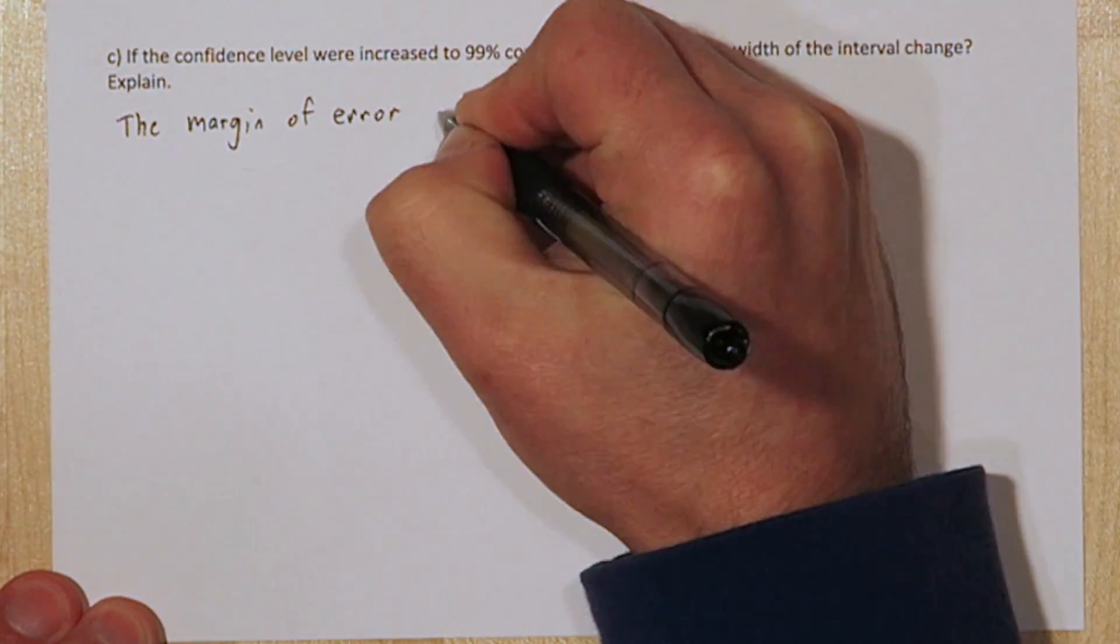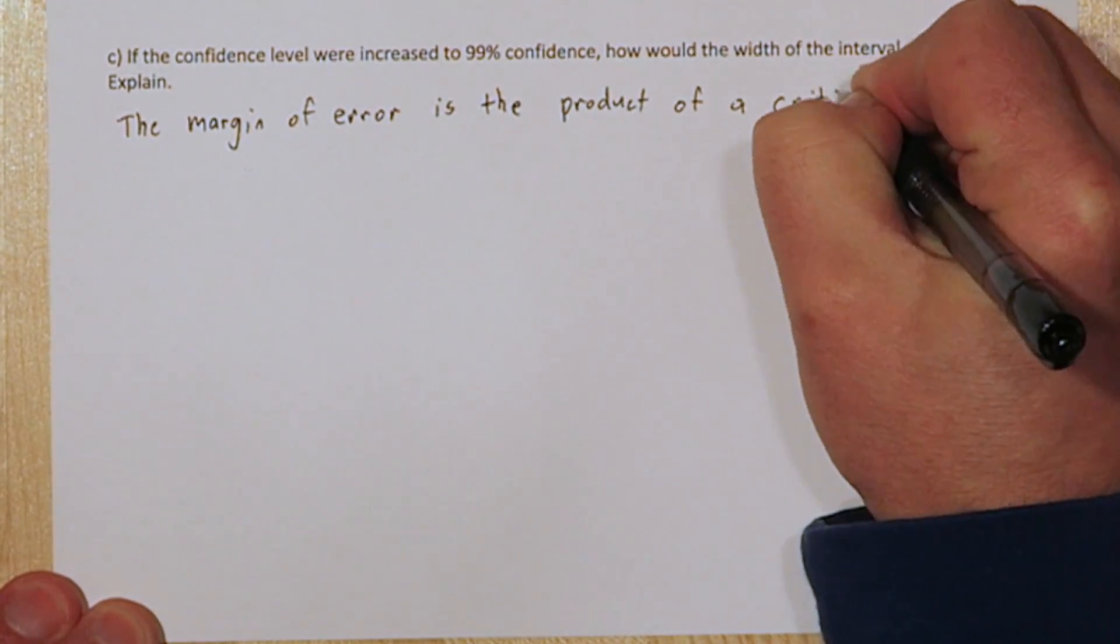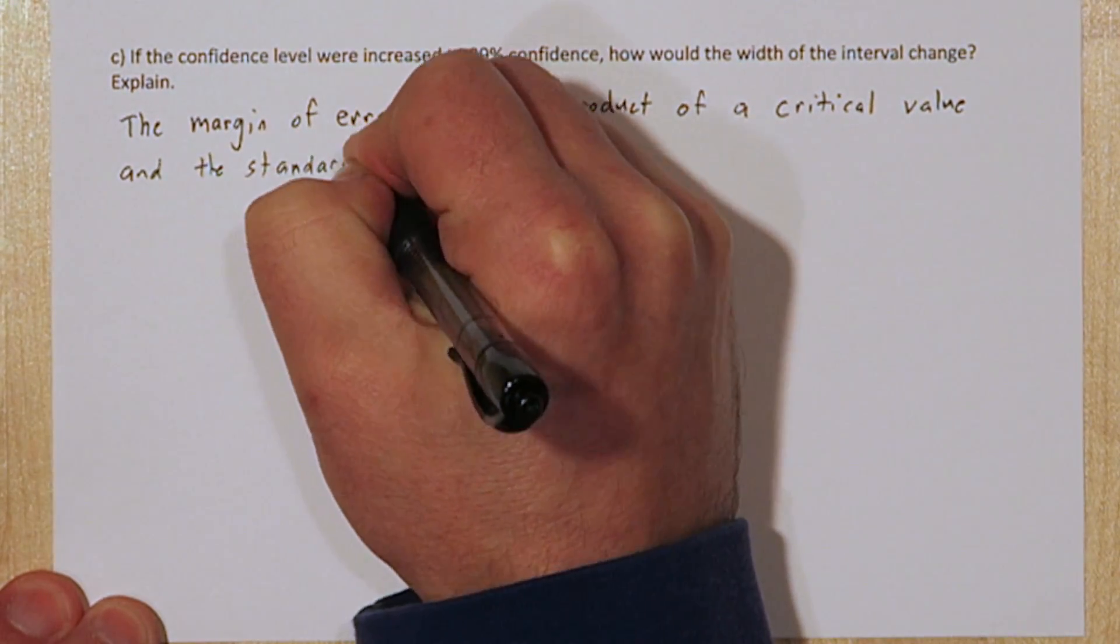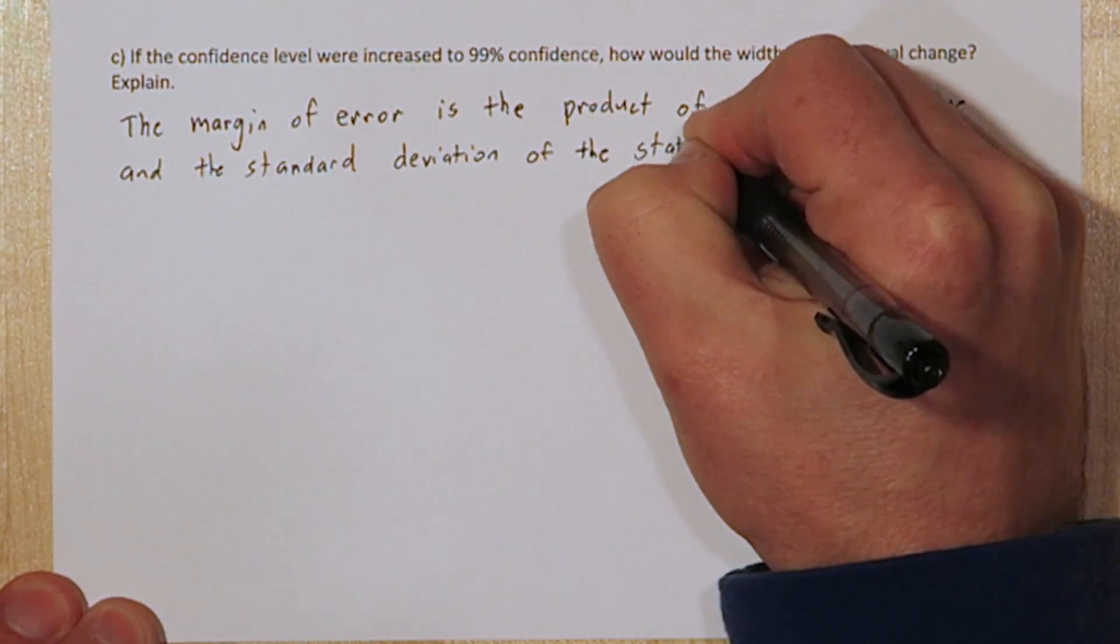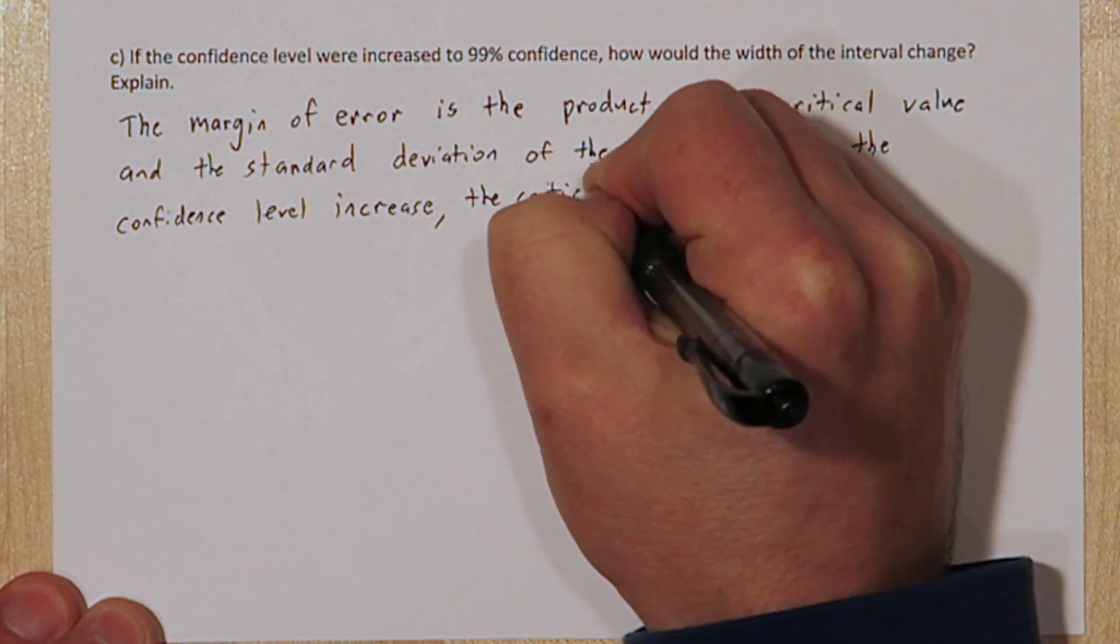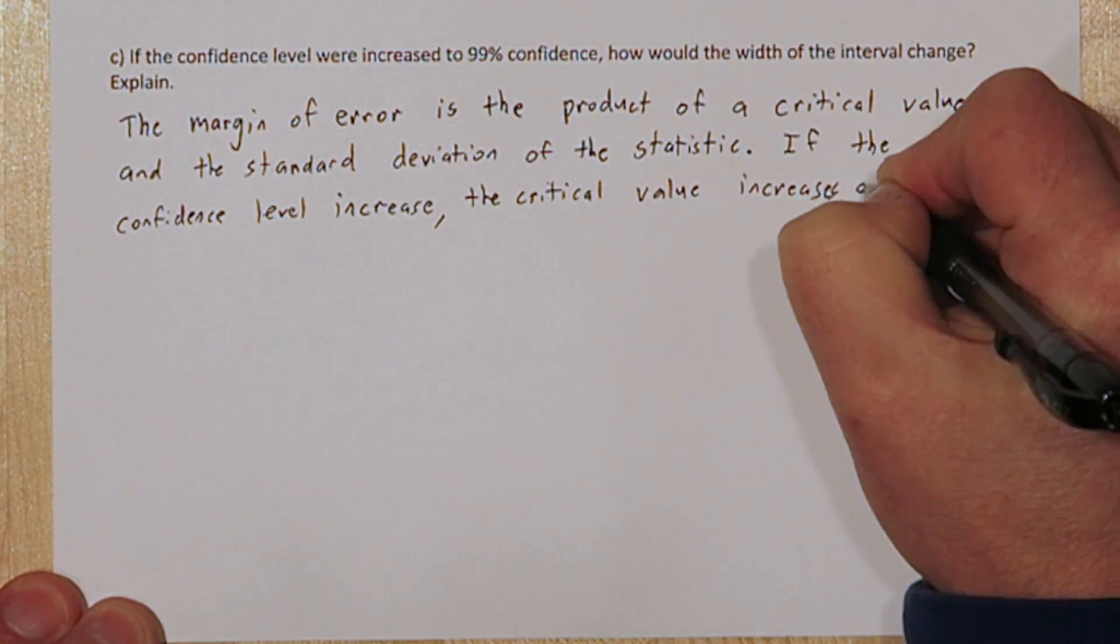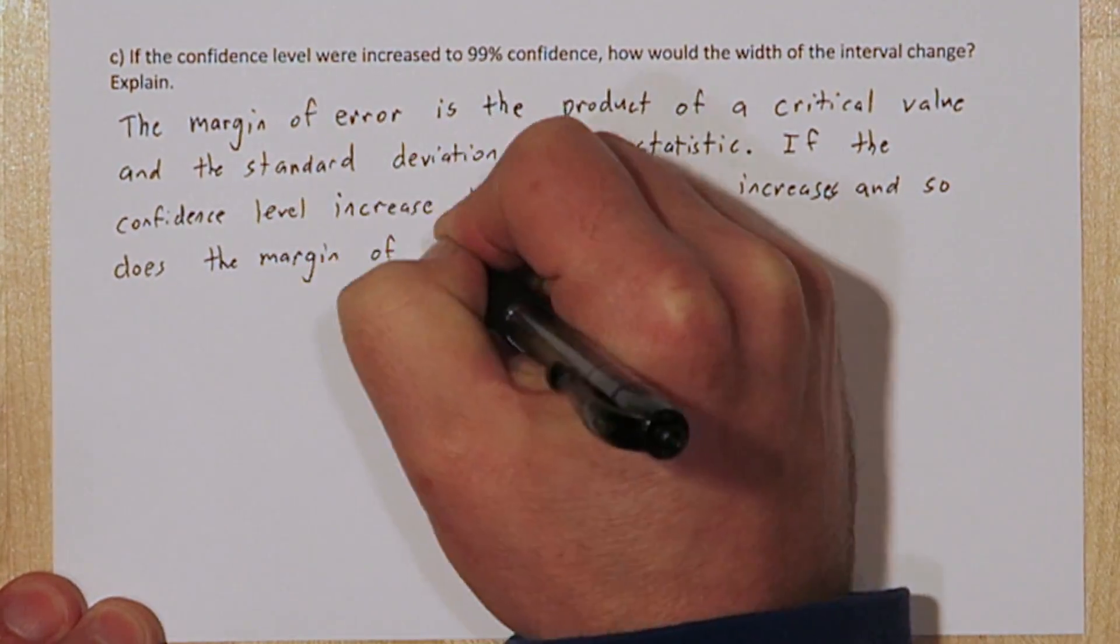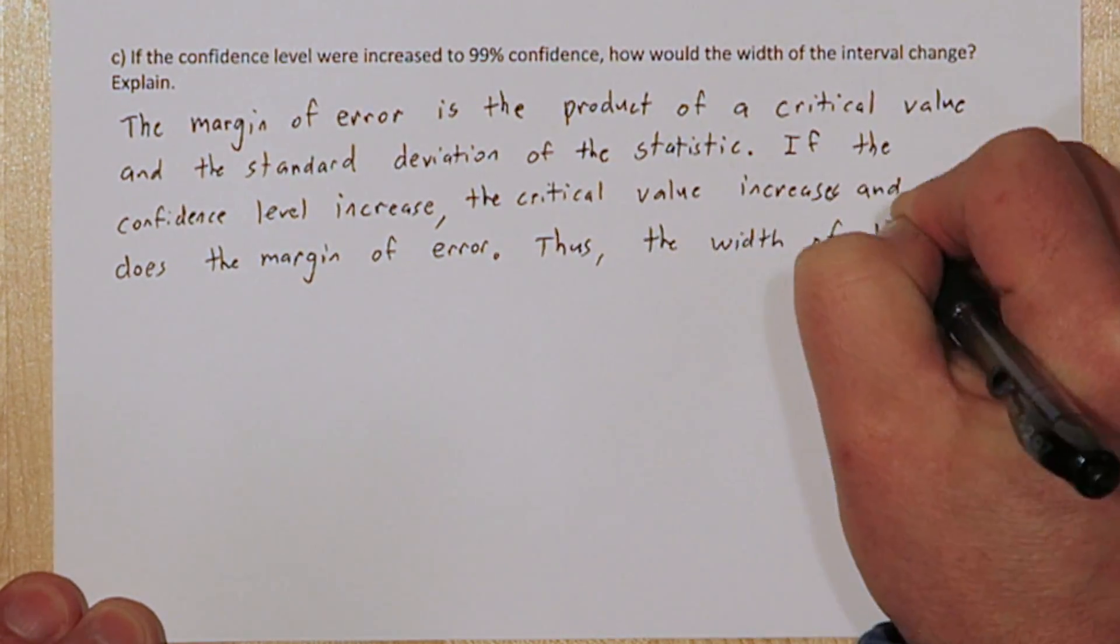We can determine how increasing the confidence level will affect the width of our interval. The margin of error is the product of the critical value and the standard deviation of the statistic. If the confidence level increases, the critical value increases, and so does the margin of error. Thus, the width of the interval would increase.